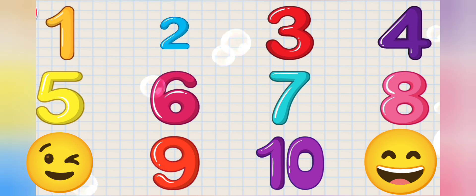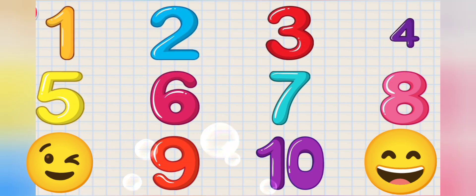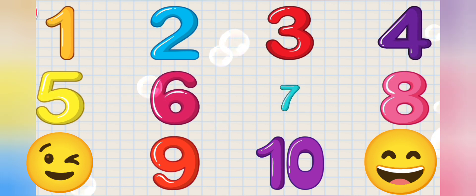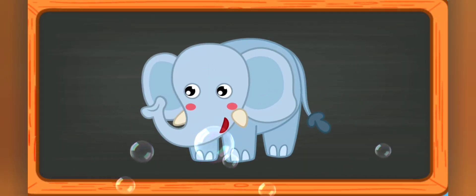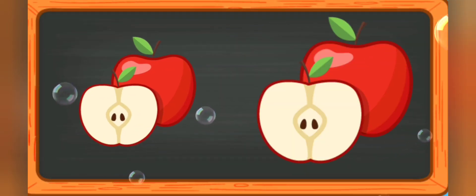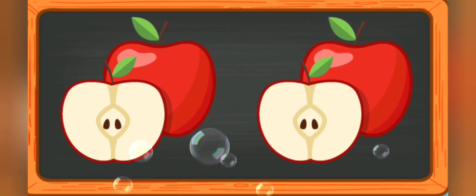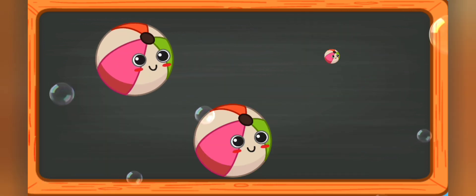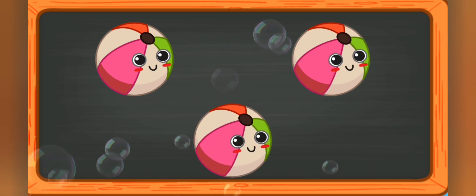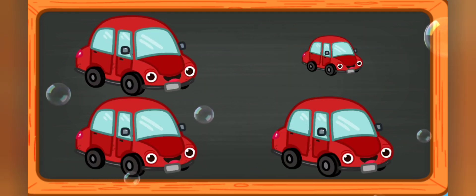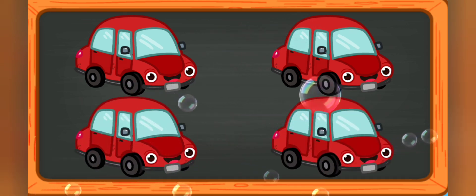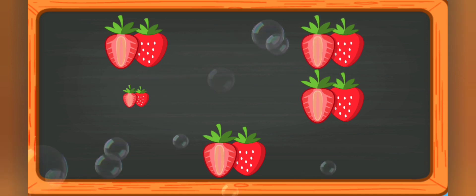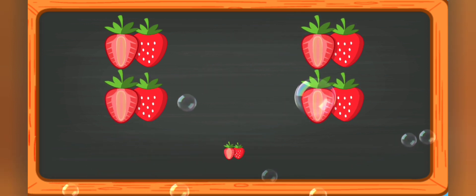One, two, three, four, five, six, seven, eight, nine, ten. One elephant. One, two apple. One, two, three ball. One, two, three, four car. One, two, three, four, five.